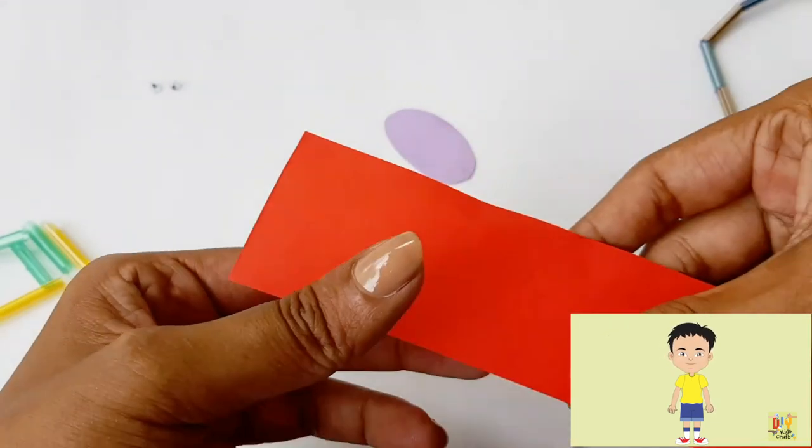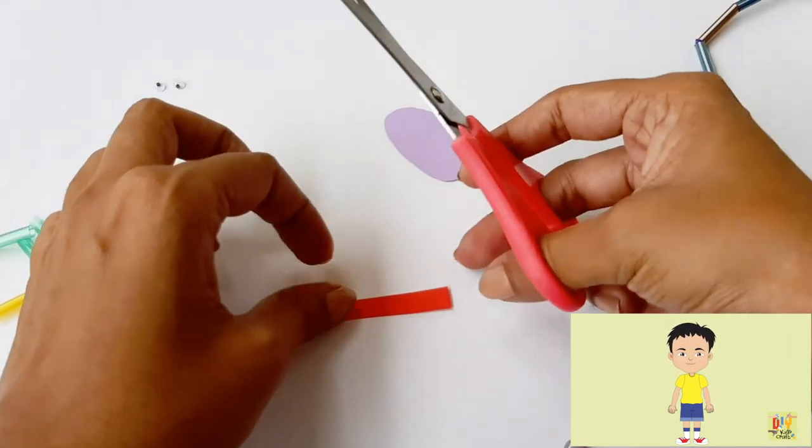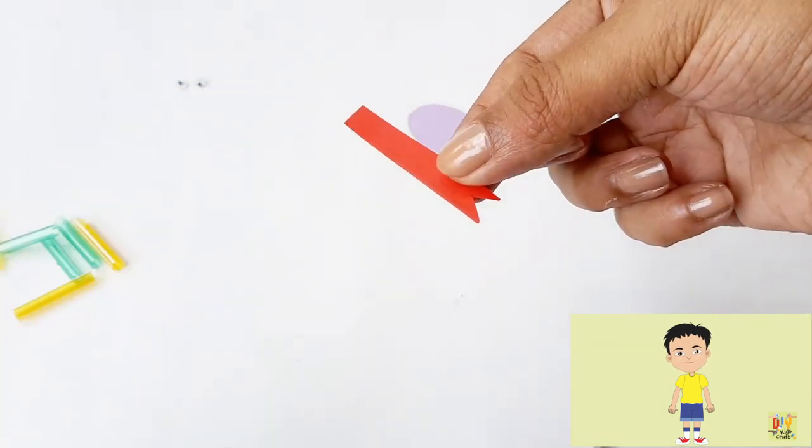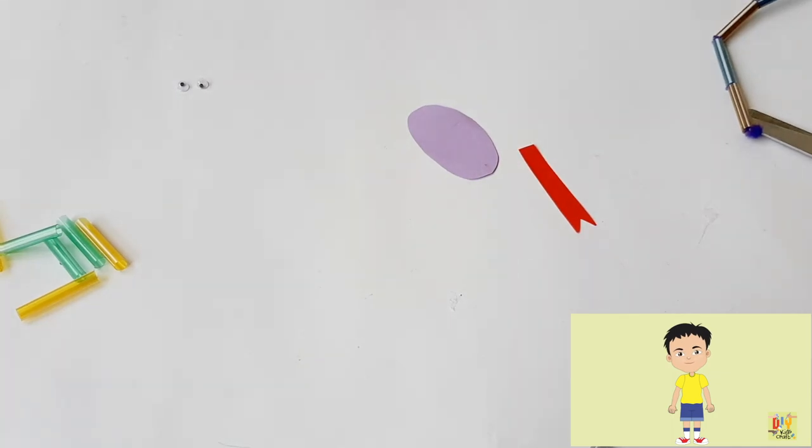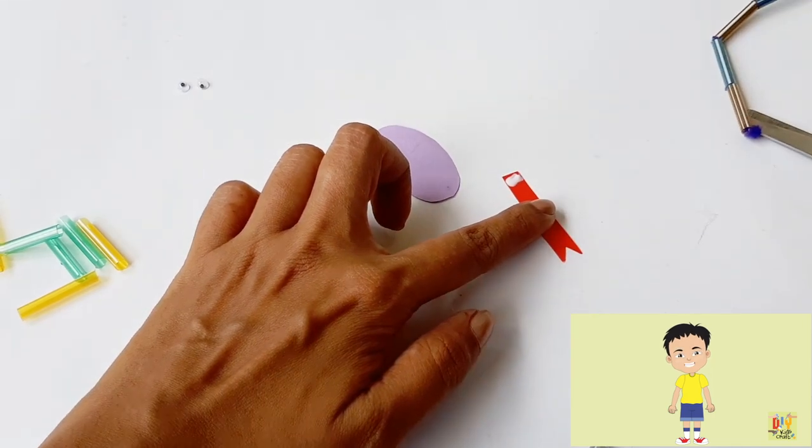Then, get a red piece of colored paper for the tongue of our snake. We will use glue to attach the tongue.